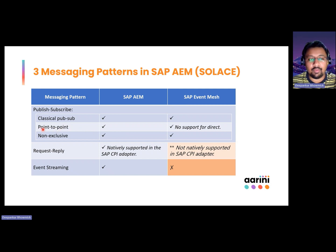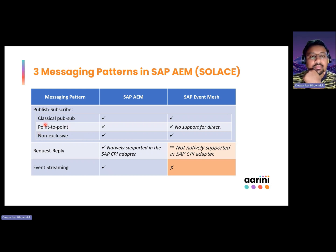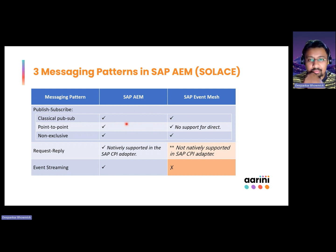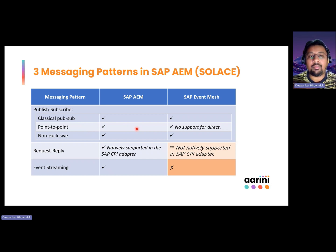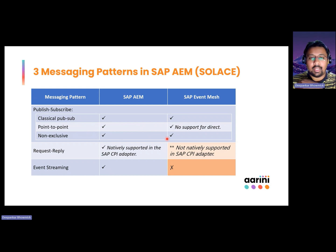There are some differences in point-to-point as well as in event streaming. Event streaming cannot be implemented in SAP Event Mesh, and request-reply can be implemented but with certain restrictions, and there is very little support for point-to-point. The publish-subscribe pattern, which is the most commonly used, can itself be divided into three sub-patterns: classical broadcast, point-to-point where the number of consumers is just one, and direct messaging — a non-persistent flavor not supported in SAP Event Mesh. Only the durable version of point-to-point can be implemented there.